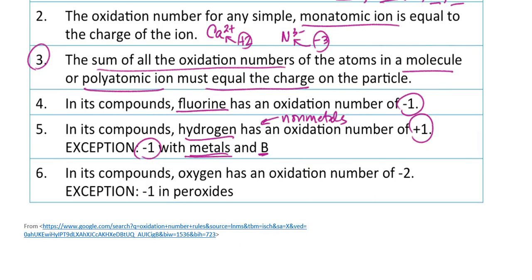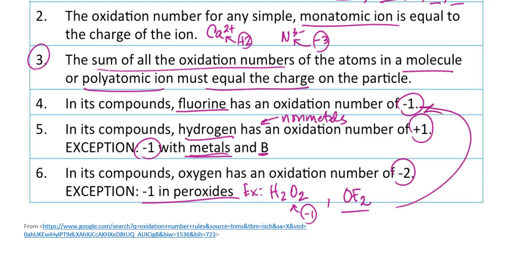Oxygen has a similar rule. The oxidation number for oxygen is normally -2. However, it can be -1 in peroxides — for example in hydrogen peroxide (H₂O₂). There is one other exception not mentioned in the chart: in oxygen difluoride (OF₂), because fluorine is always -1, the oxidation number for oxygen must be +2. Other than these exceptions, oxygen's oxidation number is almost always -2.